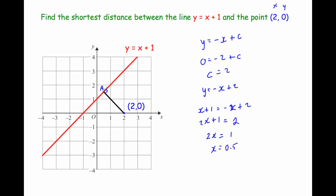So point A has an x-coordinate of 0.5. Now we need to find the y-coordinate. We substitute 0.5 into either equation — using y equals x plus 1: y equals 0.5 plus 1, so y equals 1.5. So point A has coordinates (0.5, 1.5).